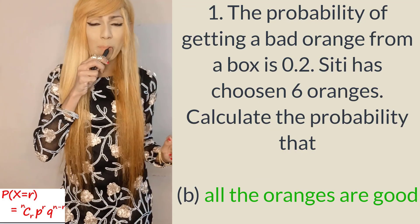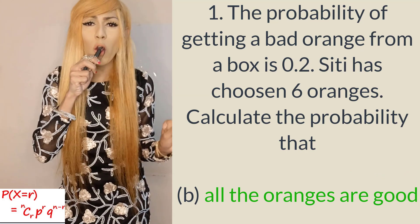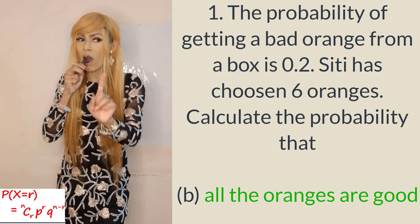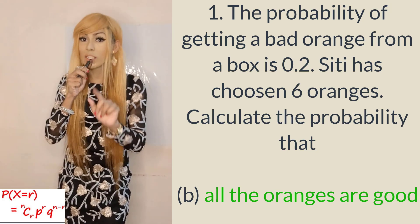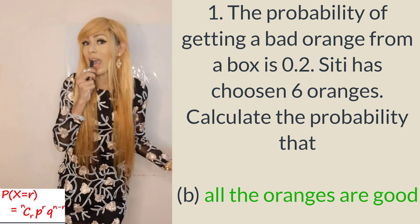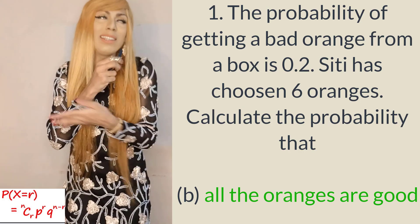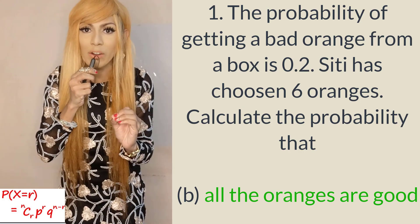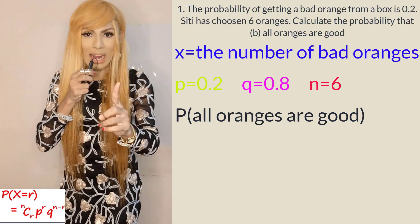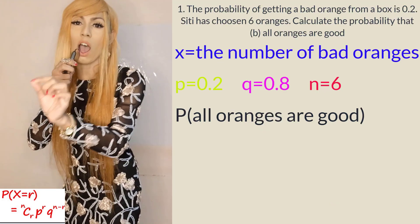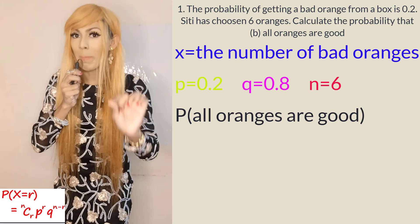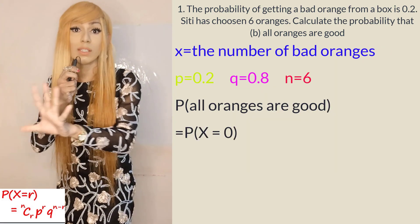For the second part of the question — all oranges are good — we are still talking about bad oranges. If all oranges are good, that means there are zero bad oranges. So P(all oranges are good) is equivalent to P(X = 0).